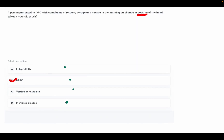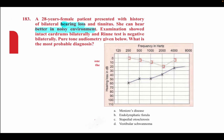A 28-year-old female presents with bilateral hearing loss and tinnitus. She can hear better in a noisy environment. Examination shows intact eardrums bilaterally and the Rinne test is negative bilaterally. Pure tone audiometry is given. Options: Meniere's disease, endolymphatic fistula, stapedial otosclerosis, vestibular schwannoma. You can see the Cahart notch at 2000 Hz on the audiogram, which is seen in otosclerosis. So the answer is option C, stapedial otosclerosis.